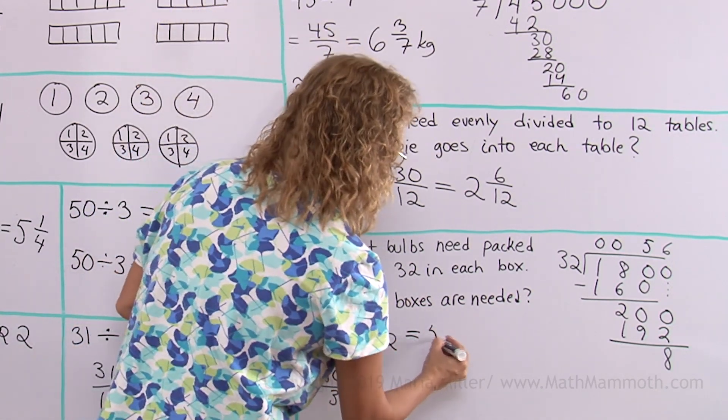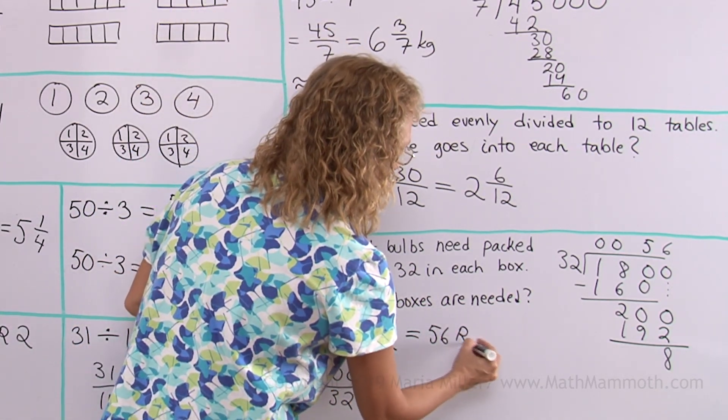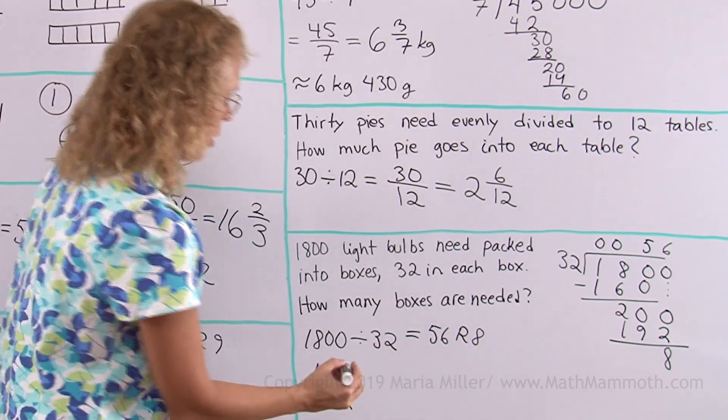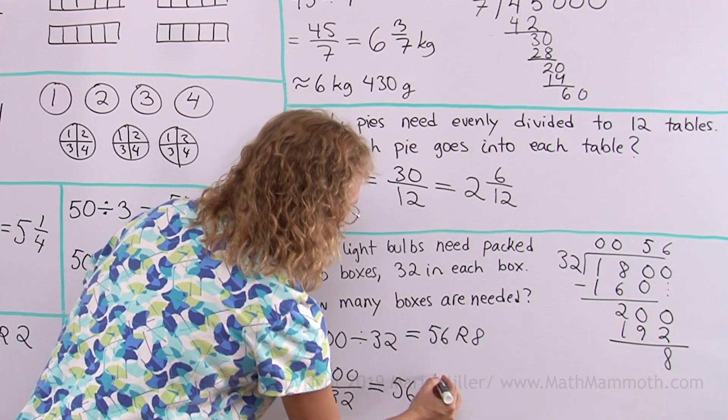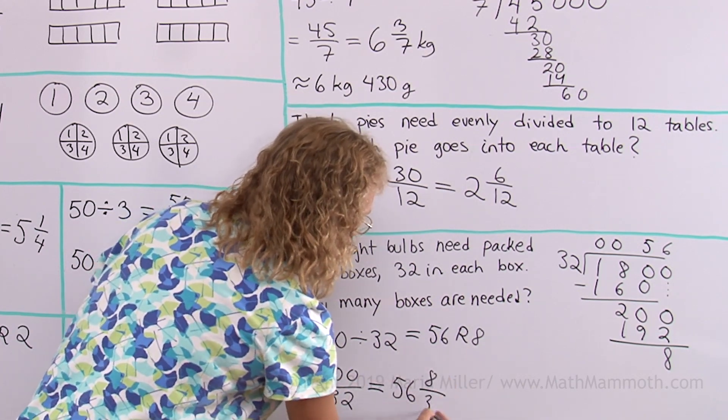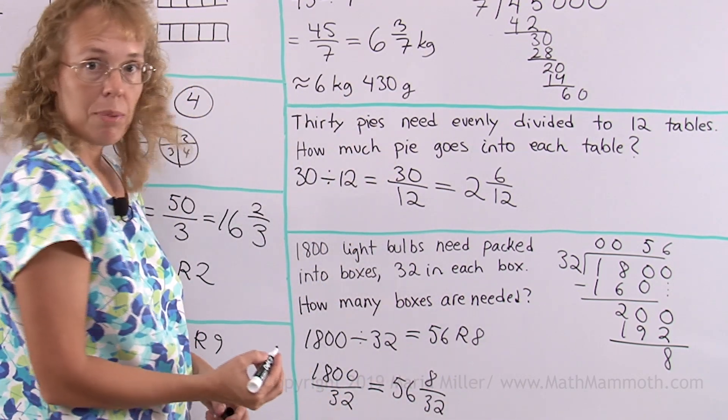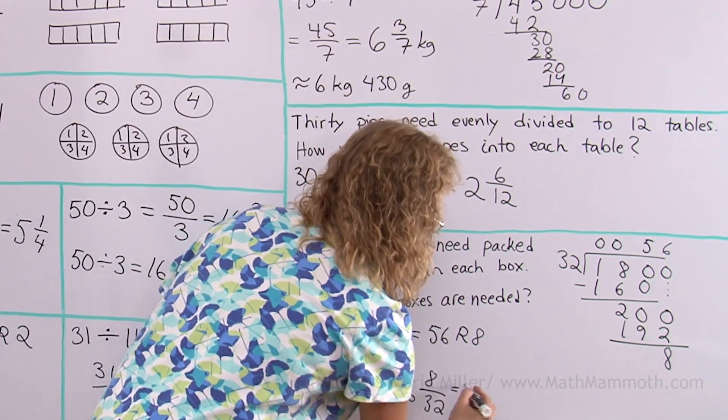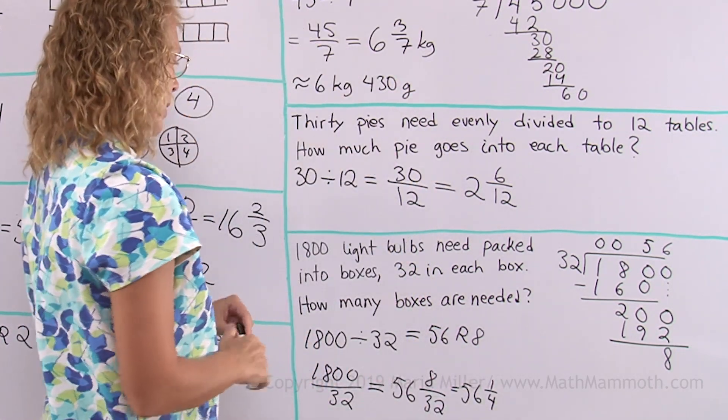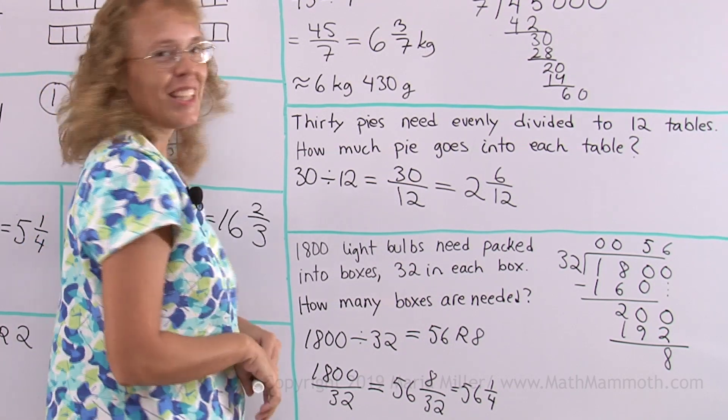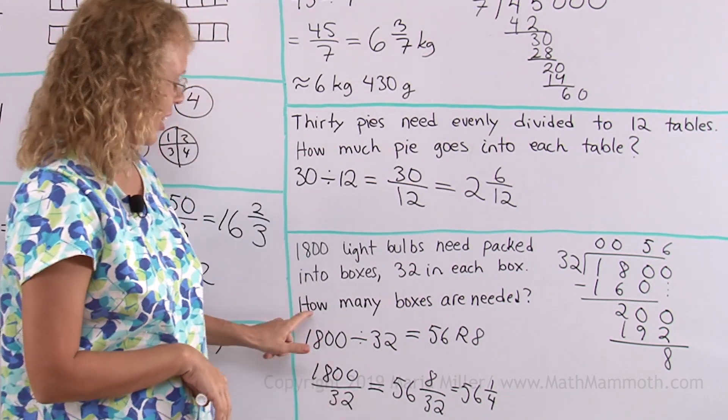So it is 56 remainder 8 or as a mixed number, it is 56, my remainder divided by 32. That actually simplifies to 56 and 1 fourth. Okay. Now, there's a trick here. This is a trick question.